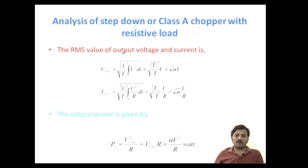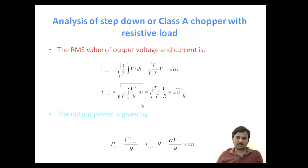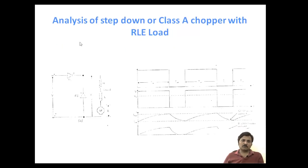The RMS value of the output current can be calculated similarly. The output power P is given by V_RMS squared divided by R, or I squared times R, which equals alpha times V squared divided by R watts. This completes the analysis of the resistive load for the class A chopper.